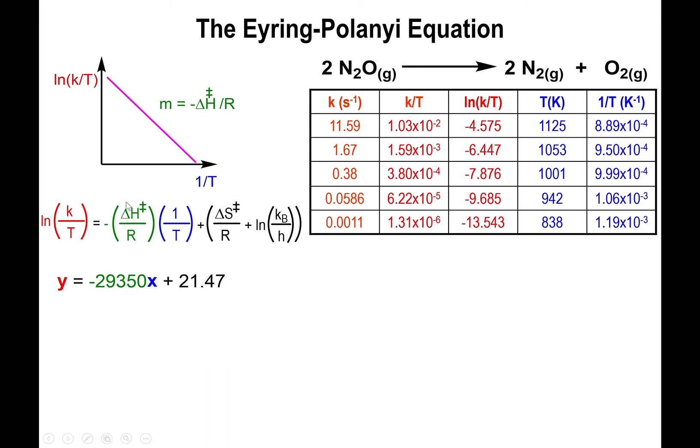The slope now equals the negative of the enthalpy at the transition state over R. Multiply the slope by negative R, you will now get the enthalpy at the transition state.